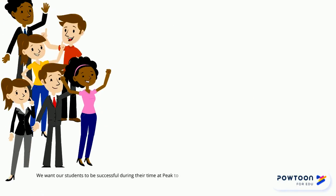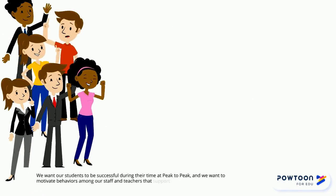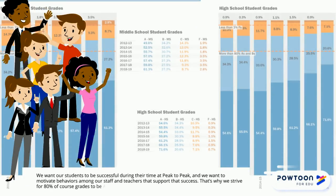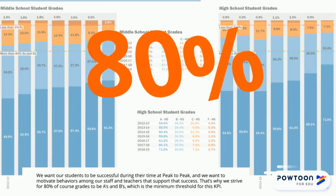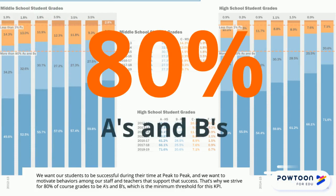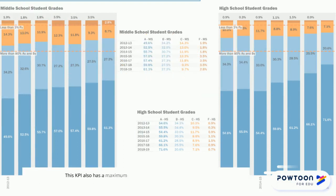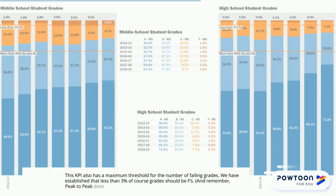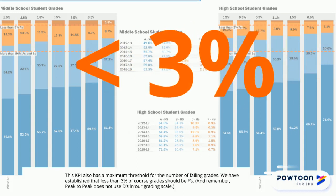We want our students to be successful during their time at Peak2Peak, and we want to motivate behaviors among our staff and teachers that support that success. That's why we strive for 80% of course grades to be A's and B's, which is the minimum threshold for this KPI. This KPI also has a maximum threshold for the number of failing grades — we have established that less than 3% of course grades should be F's. And remember, Peak2Peak does not use D's in our grading scale.